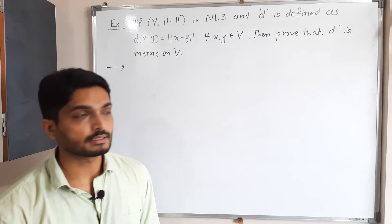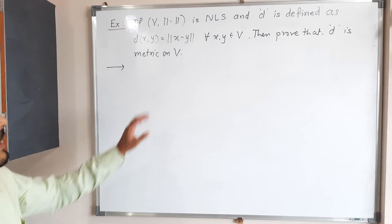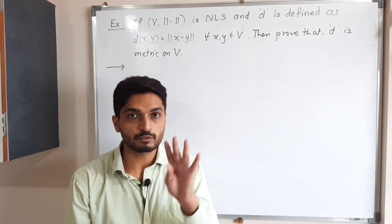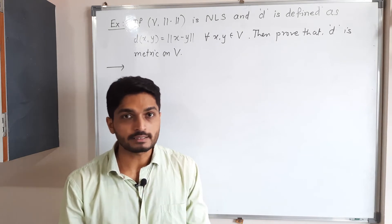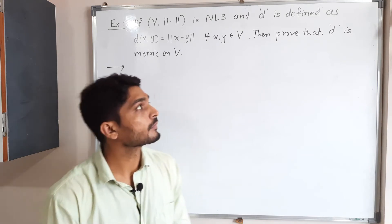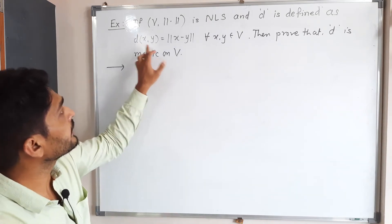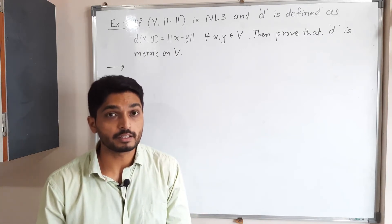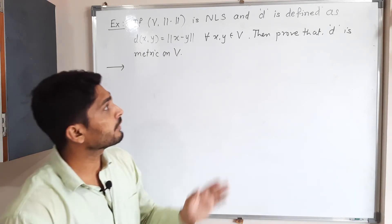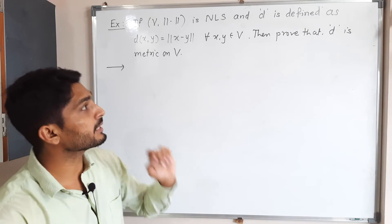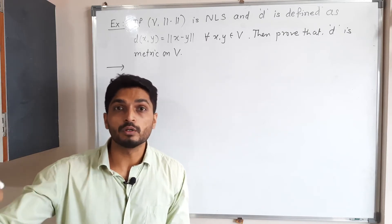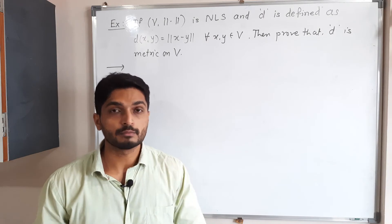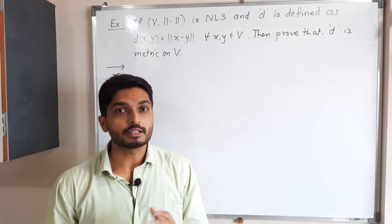Let us discuss this example. We have a normed linear space, meaning the norm satisfies all four conditions — that is given. They have defined D as D(x, y) = norm of x minus y. What we have to prove is that D is a metric on V, meaning D satisfies all four conditions of a metric.